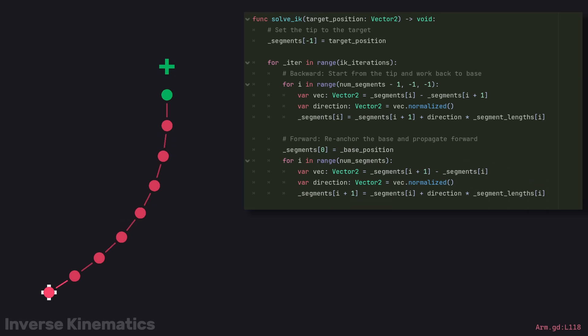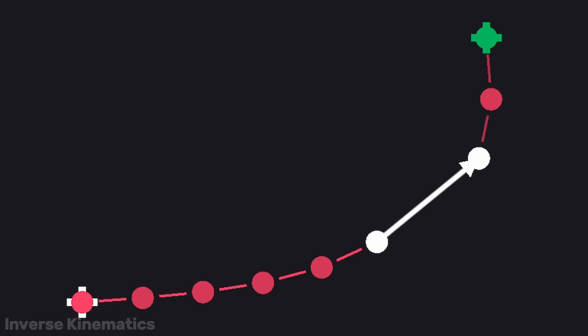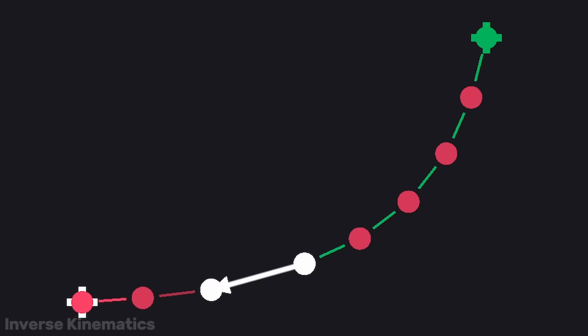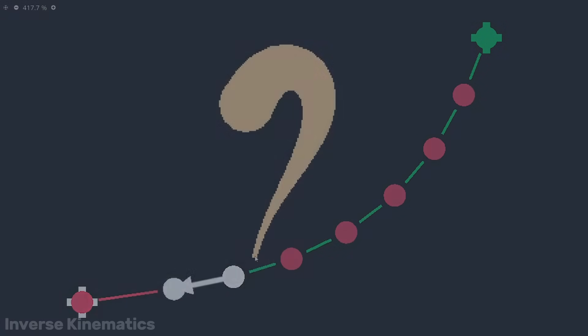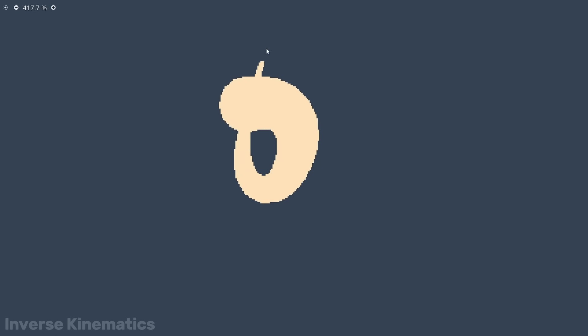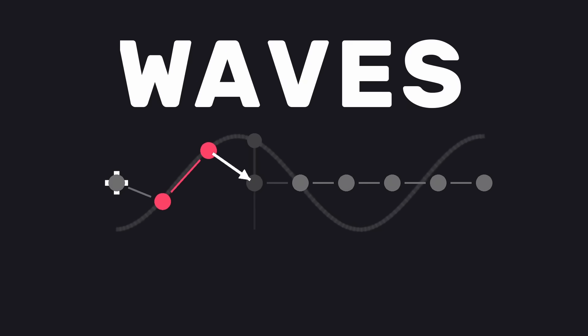This process simply repeats for as many times as you want. The more it iterates, the more accurate the result. FABRIK works, but it's a bit stiff. To give this thing a life of its own, let's have a look at waves.